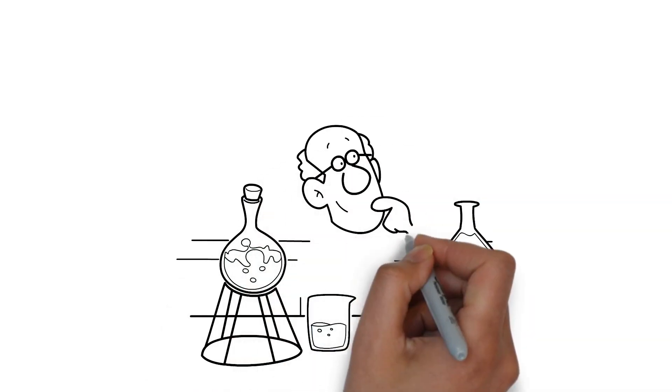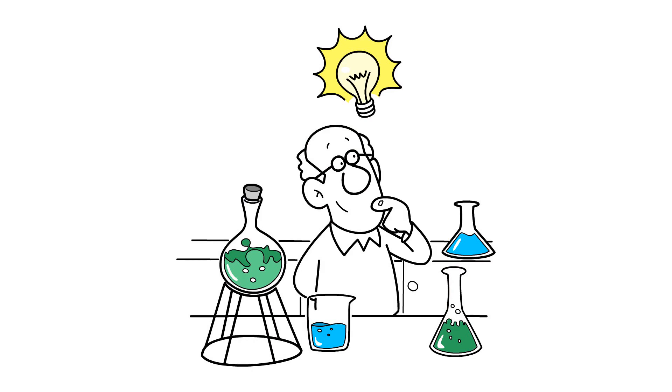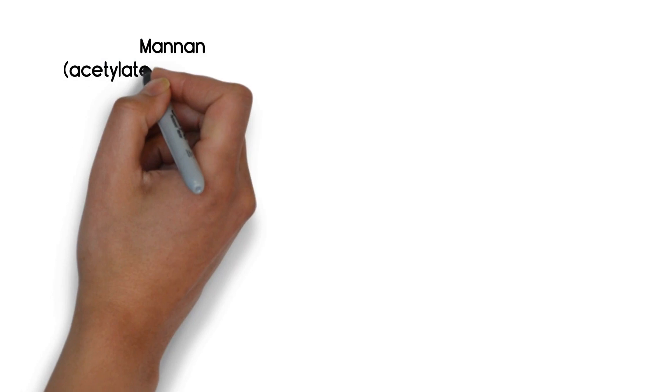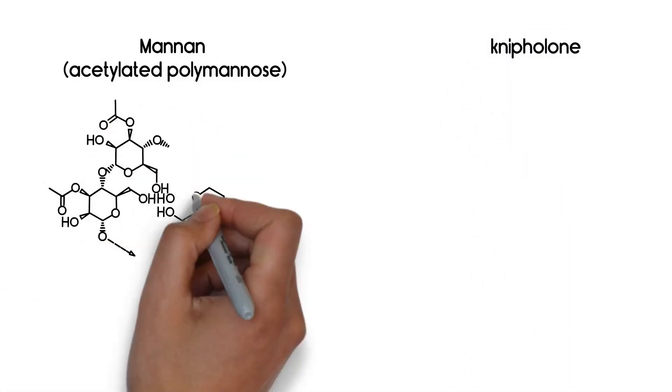The gel-like sap of Bulbine frutescens is not only soothing, but contains two star architects of skin structural design: Manon, Acetylated Polymanose, and Nephilim, which stimulate fibroblasts and inhibit inflammation.